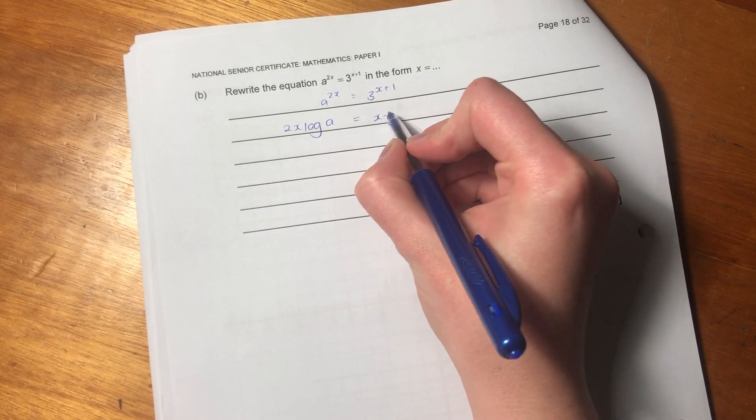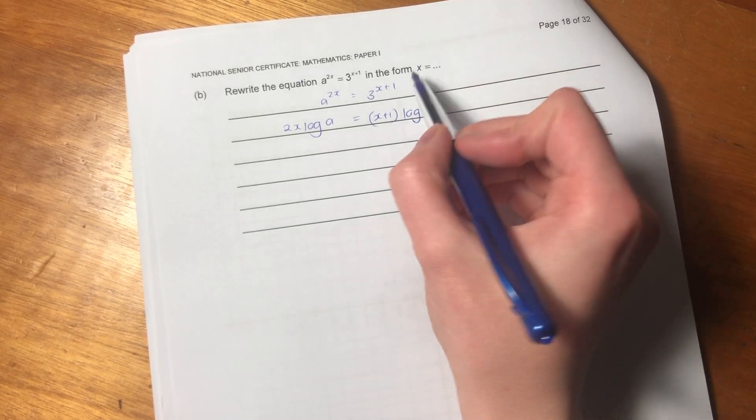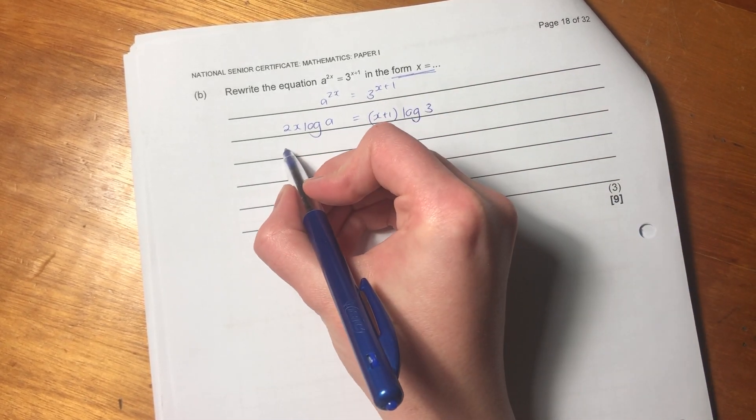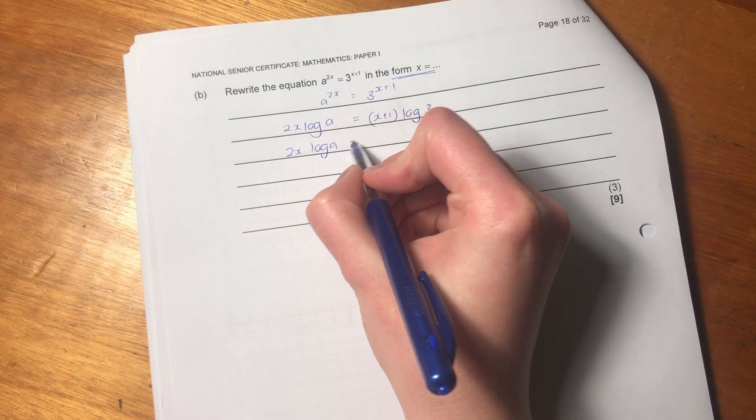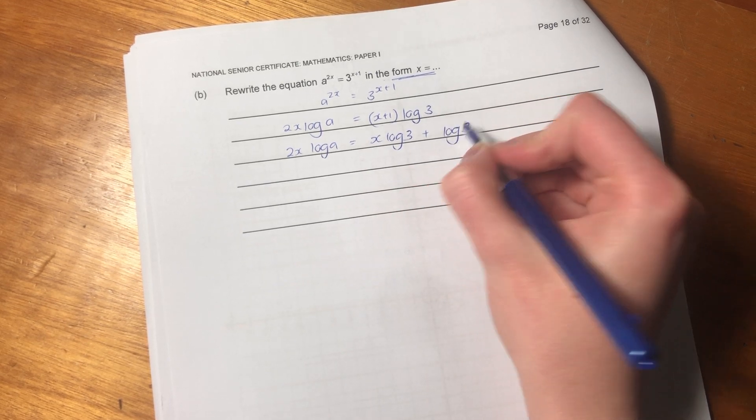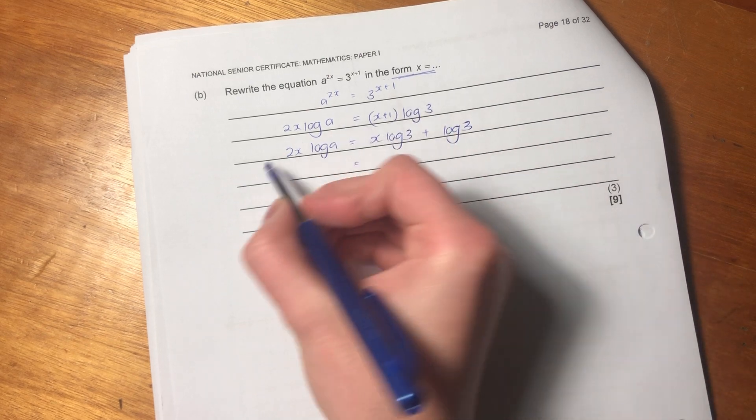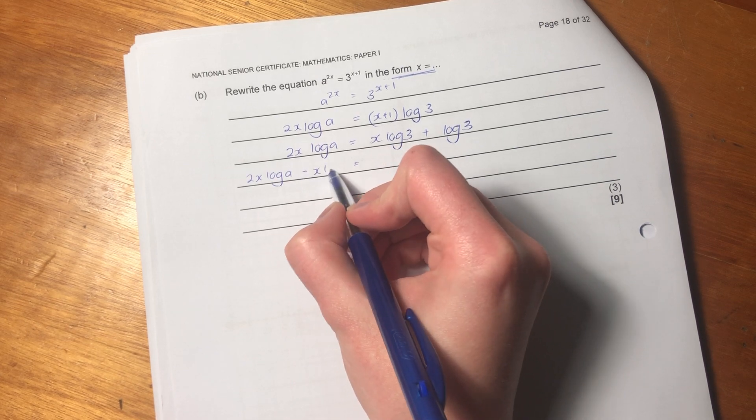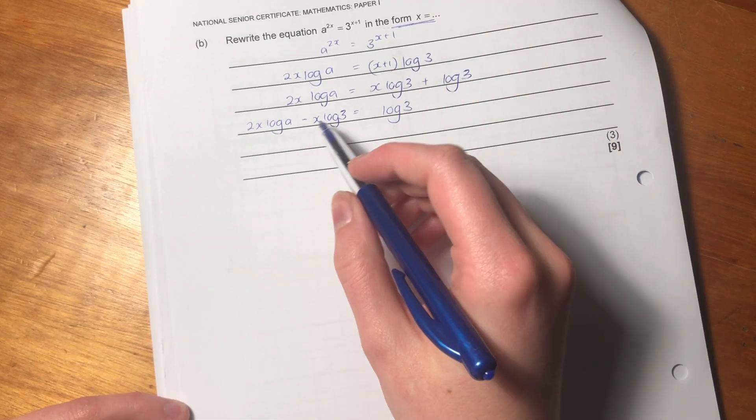And remember, when we log both sides, our exponents can come forward. So we want to get, just a reminder, we must write it in the form x equals. So we want you to get these x's by themselves. So we're going to have 2x log a equals x log 3 plus log 3. Is that correct? Yes. So now we're going to bring all the x's to the same side. We're going to say 2x log a minus x log 3. And then we're going to have equals log 3. So now we need to get the x's out.